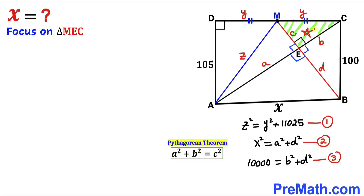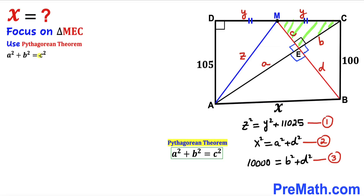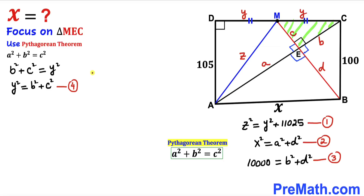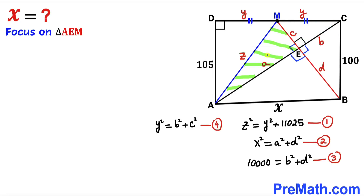Next, focusing on right triangle EMC whose side lengths are b, c, and Y. Applying the Pythagorean theorem gives us b² + c² = Y², which we can also write as Y² = b² + c². We call this equation number four.